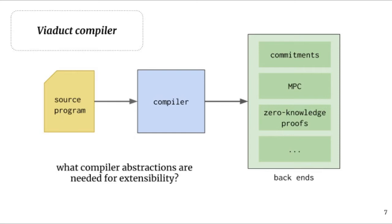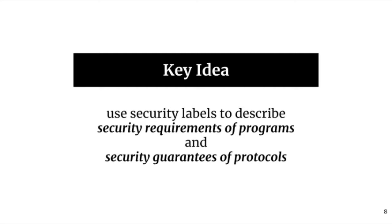We had to devise novel abstractions in order to make Viaduct extensible. Namely, the compiler needs to specify the security requirements of programs without recourse to their implementation, and to reason about the security guarantees of cryptographic implementations in a general fashion. To solve these problems, we leverage security labels as seen in language-based security. We use labels to specify the security requirements of source programs, and also to specify the security guarantees of protocols that will store data or perform computations. The Viaduct compiler uses the common interface of security labels to search for efficient protocols that can securely implement source programs.